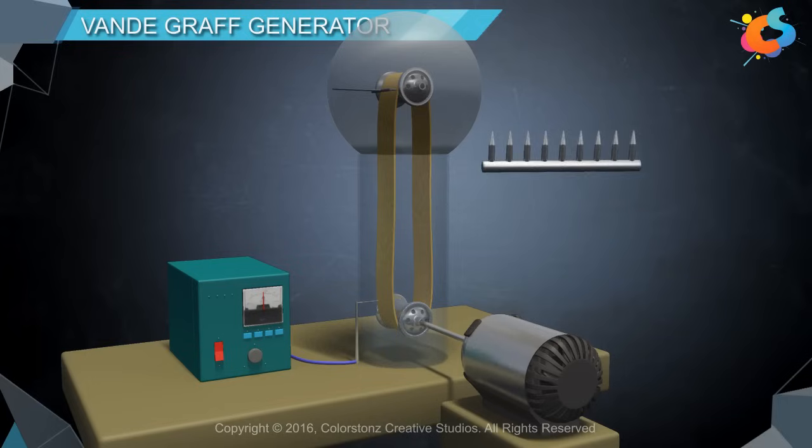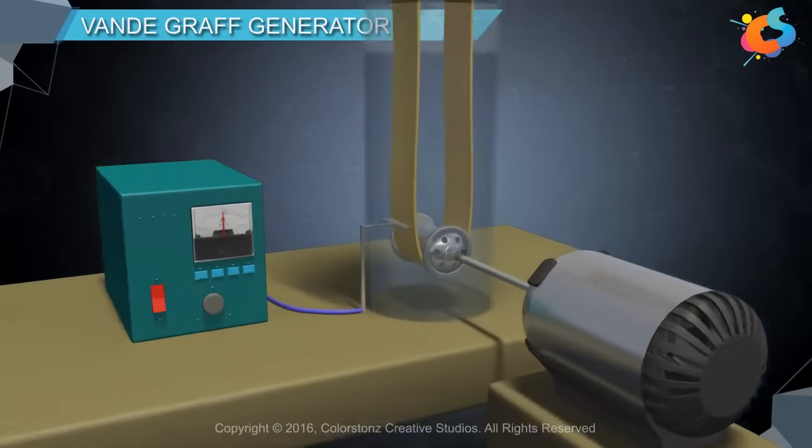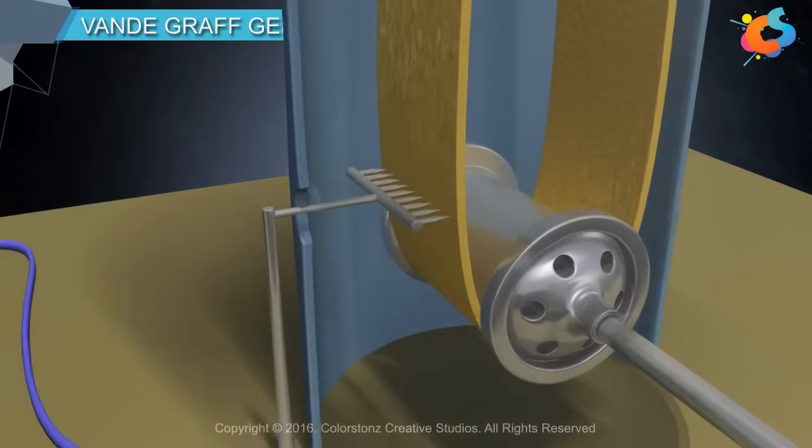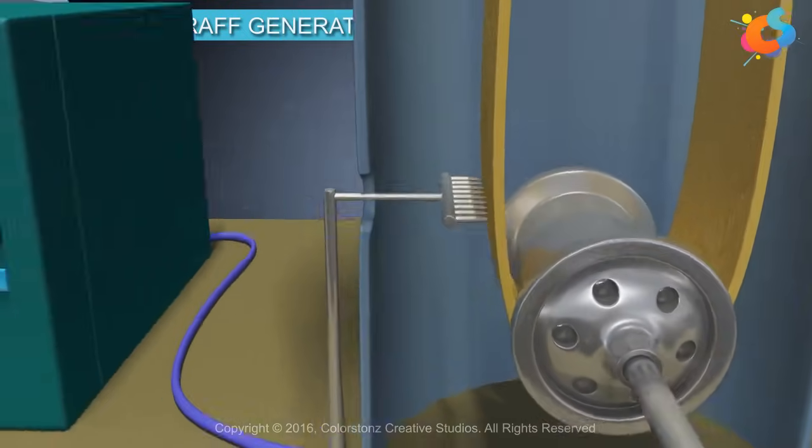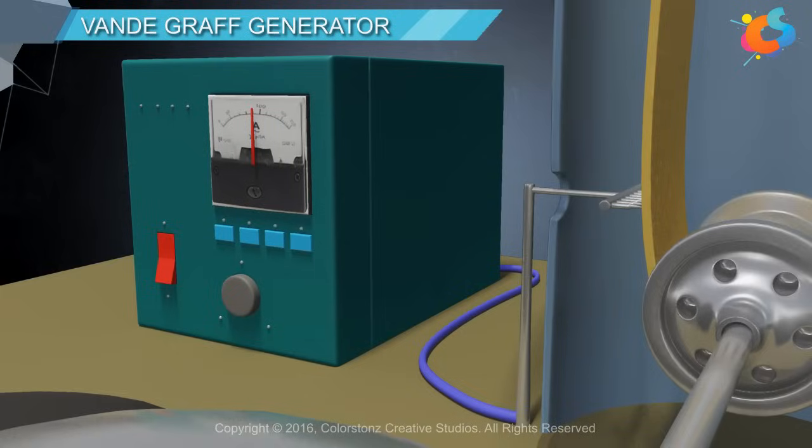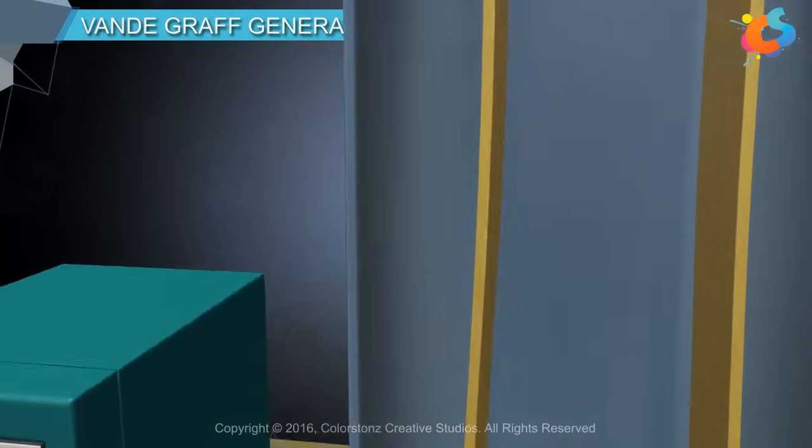An electron emitter in the form of a comb made up of sharp metal points is positioned near the lower roller in such a way that the comb is pointed towards the rubber belt. The comb is maintained at high positive voltage by external supply.